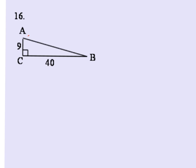In number 16, angle A is at the top. We're dealing with tangent because we're given opposite, which is 40, over adjacent, which is 9. If we plug this into our calculator, inverse tan of 40 divided by 9, we get angle A is about 77.3 degrees.